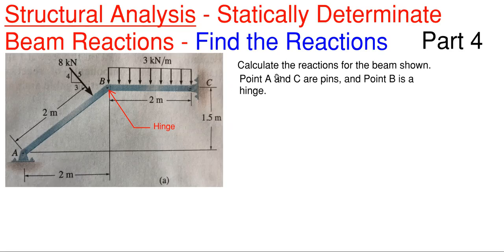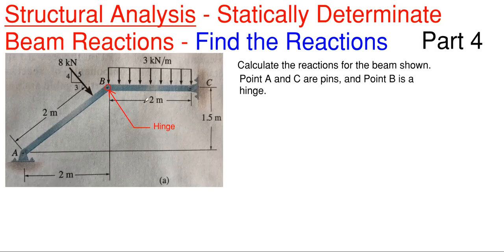So what we have here is this member shown on the left, and we are told that point A and C are pins, and point B is a hinge that connects these two members. A hinge is just a portion of a member that connects two or more portions together — typically just two. A hinge can only transfer translational forces from one portion to the other. So our first portion would be from A to B, and then B to C. This hinge does not transfer moment — it does allow for rotation.